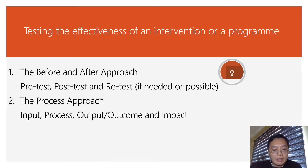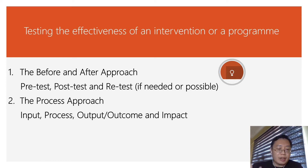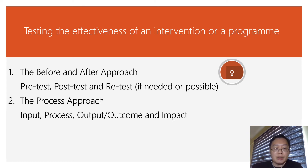Now, testing the effectiveness of an intervention or program, there are two approaches. The first one is the before and after approach, or sometimes we simply call it a pre-test or post-test, or in some cases if it is possible, you have pre-test, post-test and re-test. The other approach is called the process approach, where we look at input, process, output or outcome, and the impact.